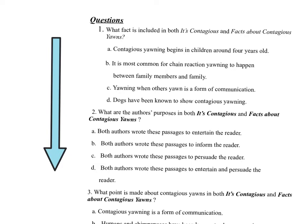I can see from your responses that many of us chose 'Contagious yawning begins in children around four years old.' This fact is included in both texts, so A is the strongest answer. Let's look at number two: what are the authors' purposes in both texts?